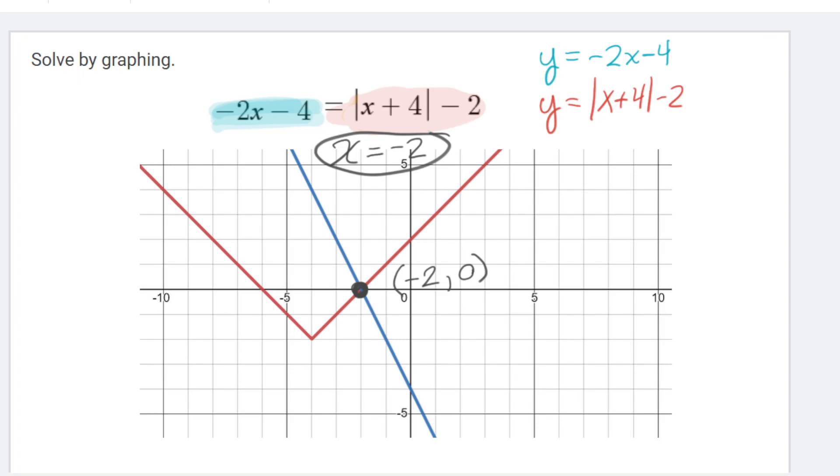Now, the other thing is you want to be careful. This could extend on and intersect with this V shape. And the only reason why I know that it doesn't is because the blue line is steeper than the red line. So these are going to slowly expand away from each other as they approach negative infinity. So the only solution here is x equals negative 2. And you need to make sure that you only use the x value from the ordered pair, not the y value.